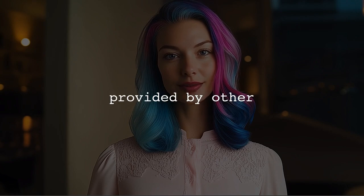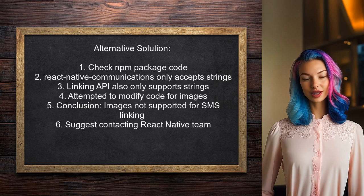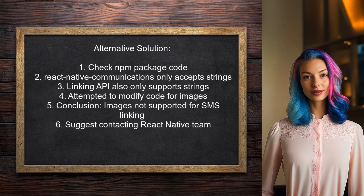Now let's look at the answers provided by other users. One user suggests checking the NPM package code for React Native Dash Communications. They found that it only accepts strings for text messages. This package is essentially a user-friendly wrapper for the linking API, which also only supports strings. They attempted to modify the code to accept images but encountered the same limitations. Ultimately, they concluded that images are not currently supported for SMS linking and recommend reaching out to the React Native team for further assistance.